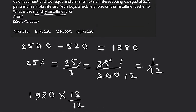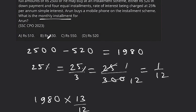The monthly installment comes out to Rs.520. Looking at the options, Rs.520 corresponds to option D. So D is the correct answer. To repeat: the question stated the phone costs Rs.2500 cash, or with a down payment and 4 equal monthly installments at 25% per annum, and the monthly installment is Rs.520.